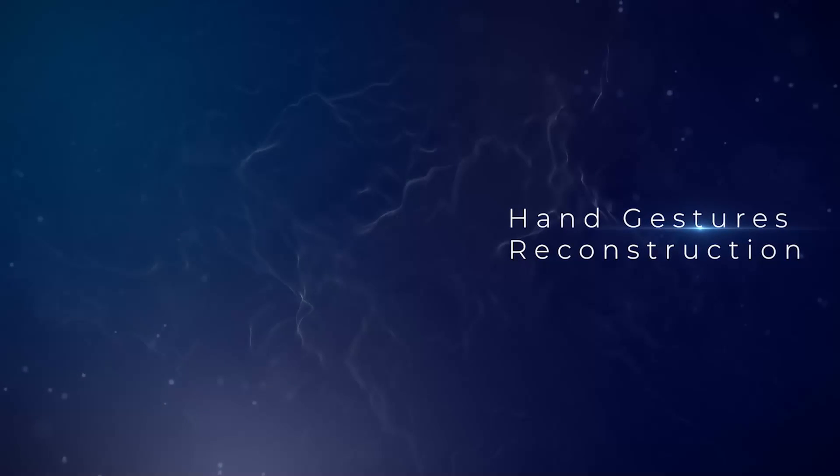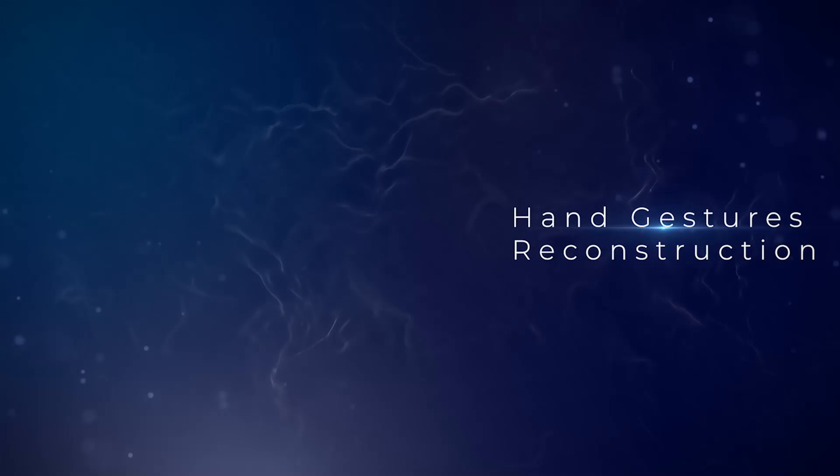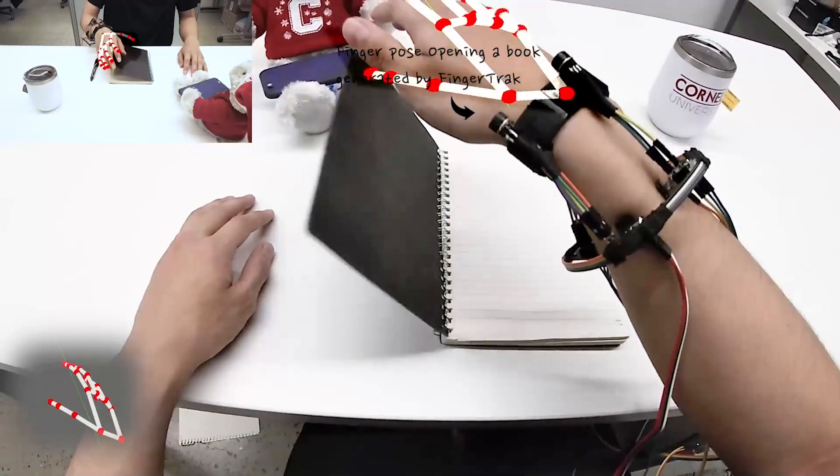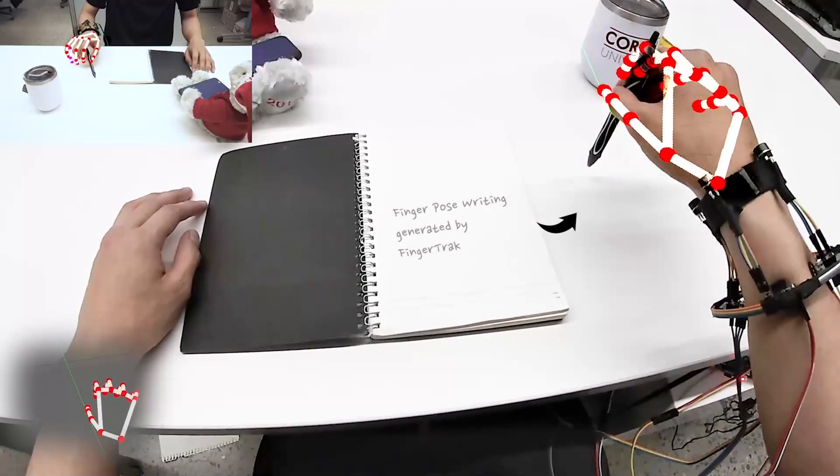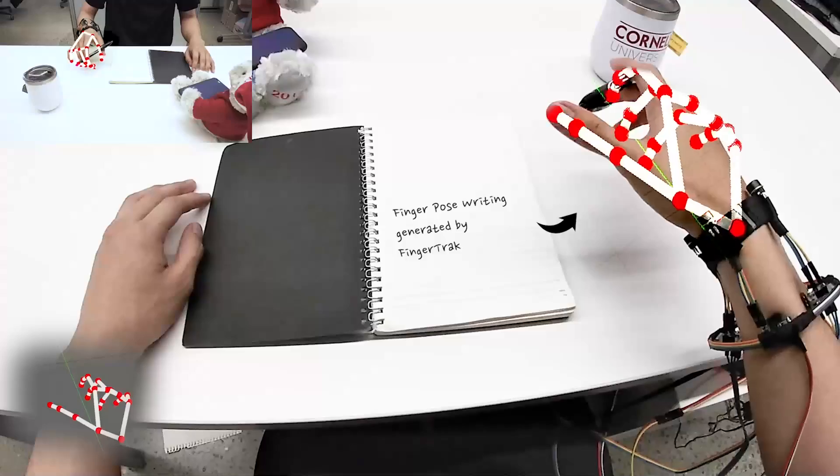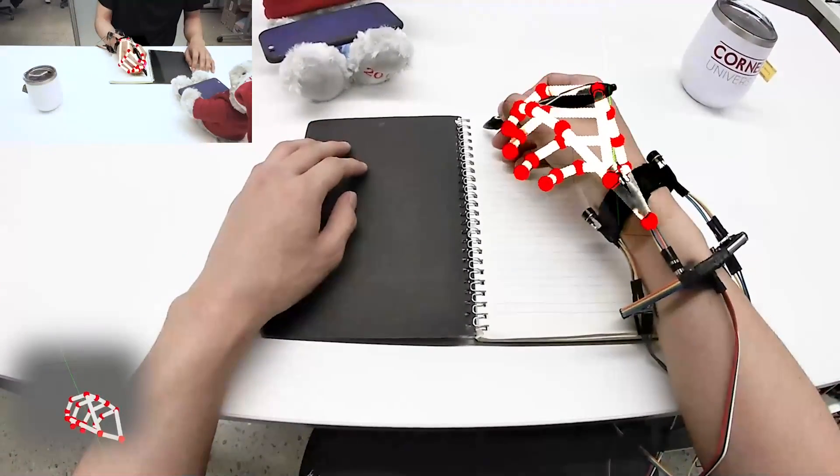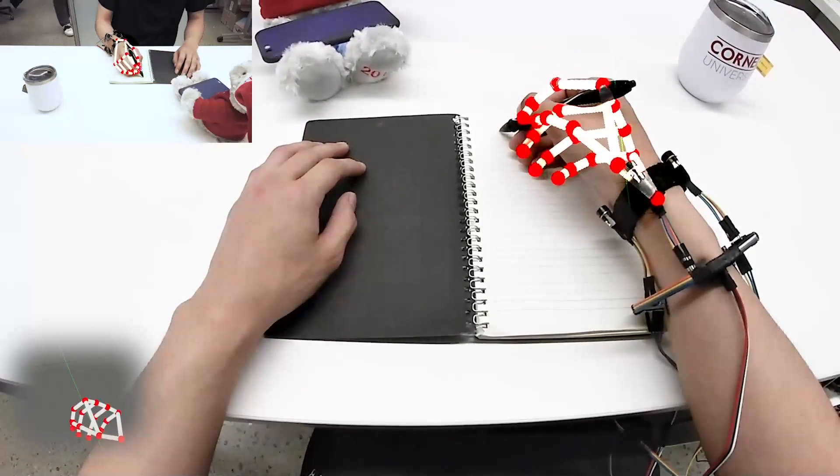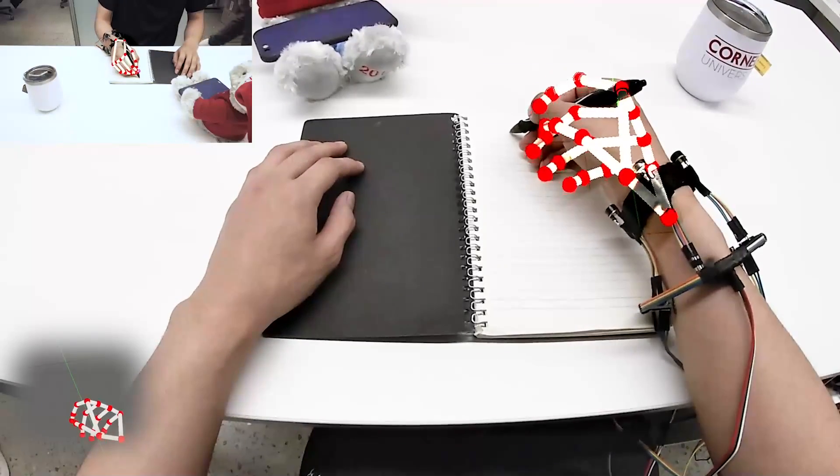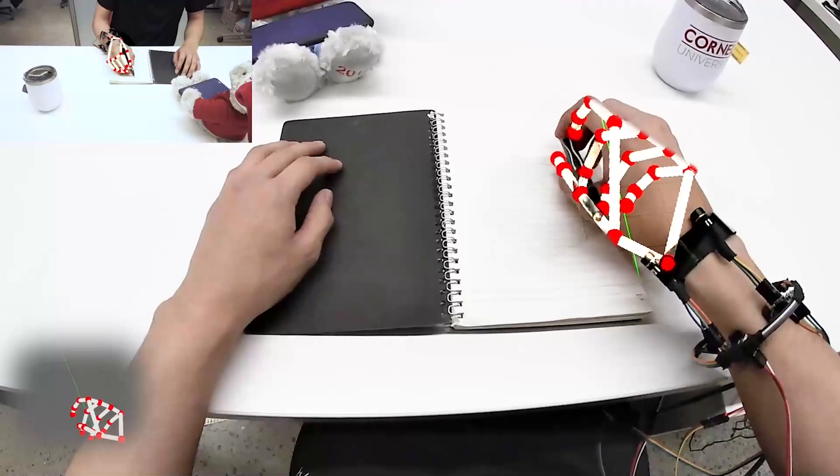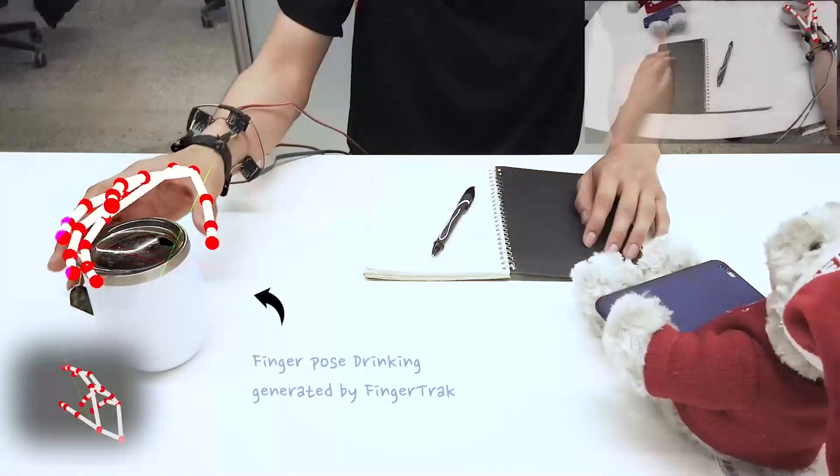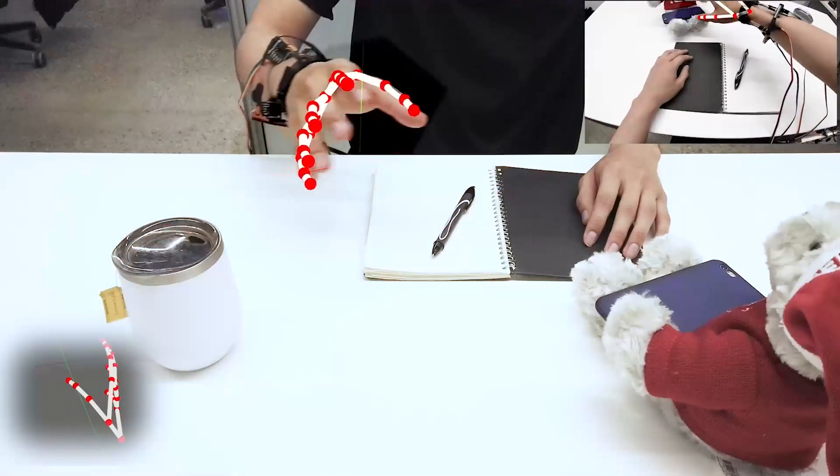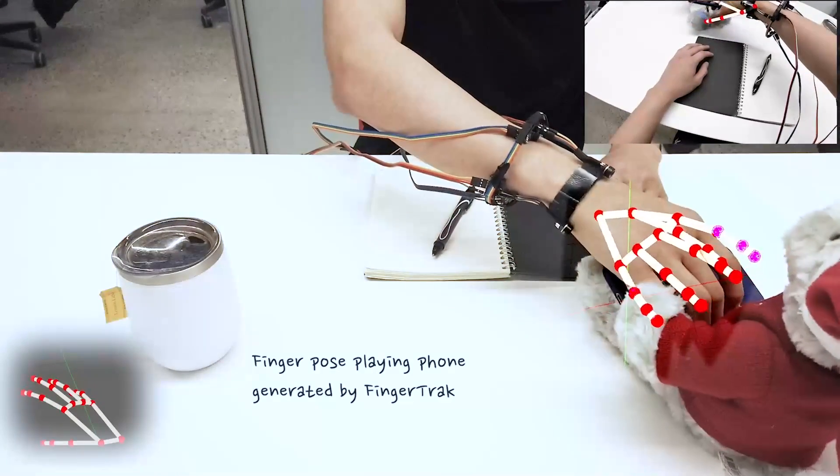The smart wristband can also reconstruct hand poses in real-life scenarios. When people are wearing the wristband, hand poses in daily activities like opening a book, writing, eating, drinking, and grabbing a phone can be estimated.